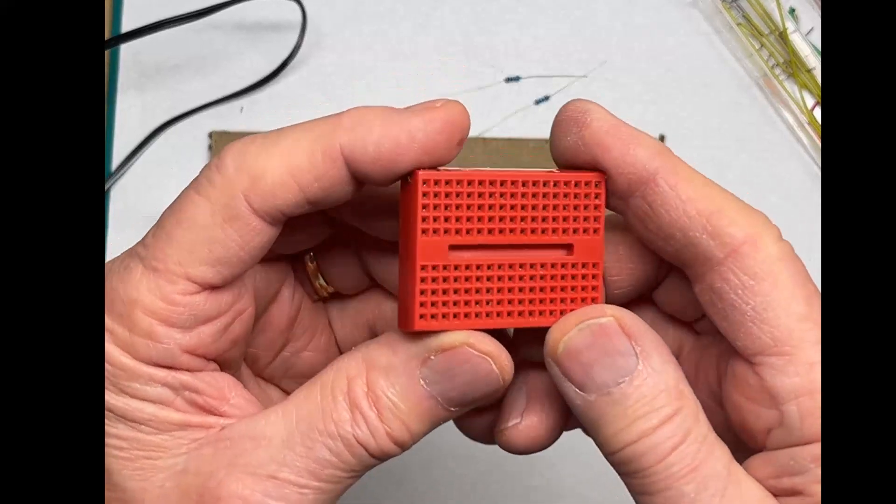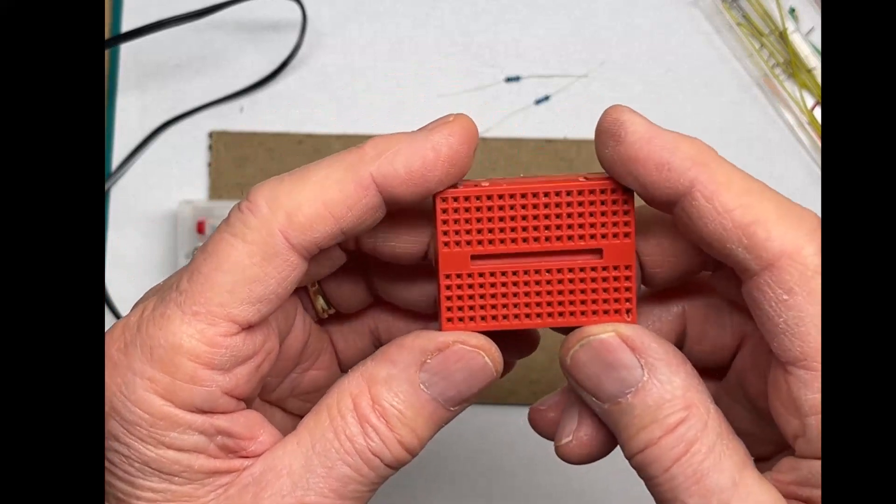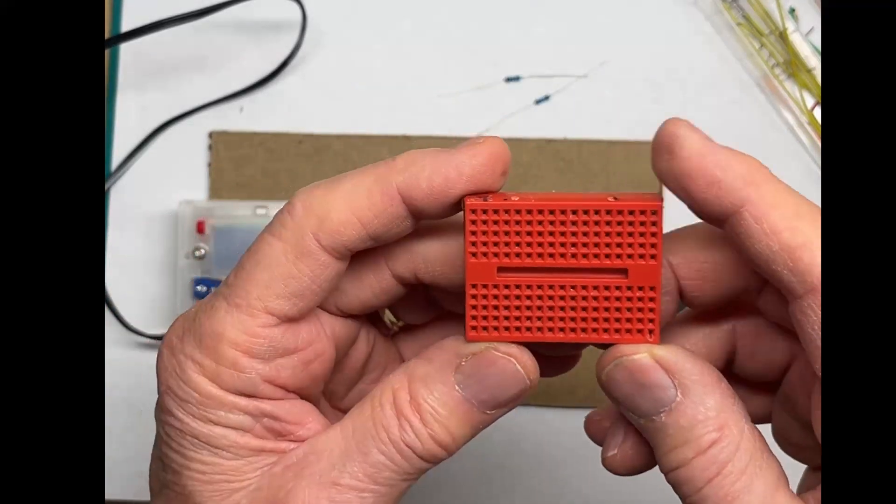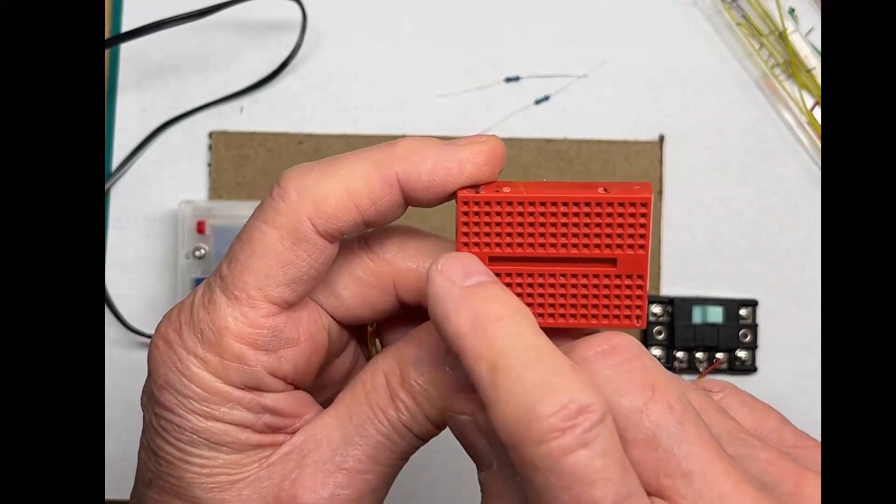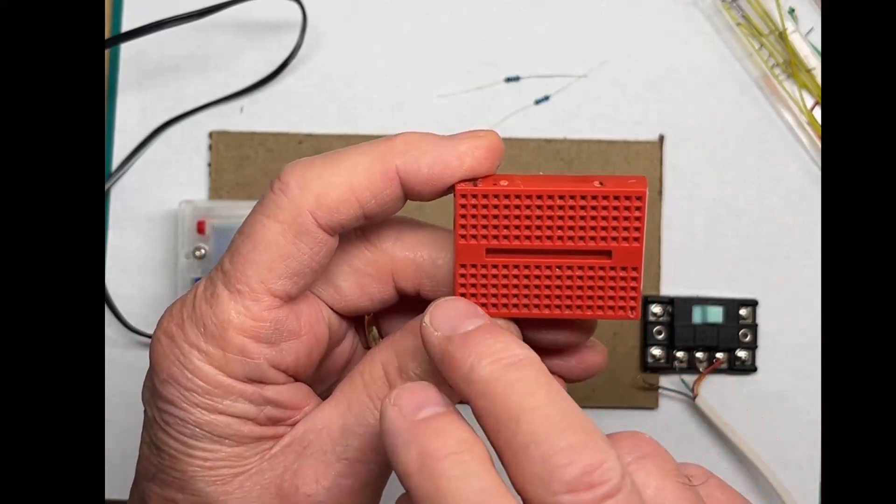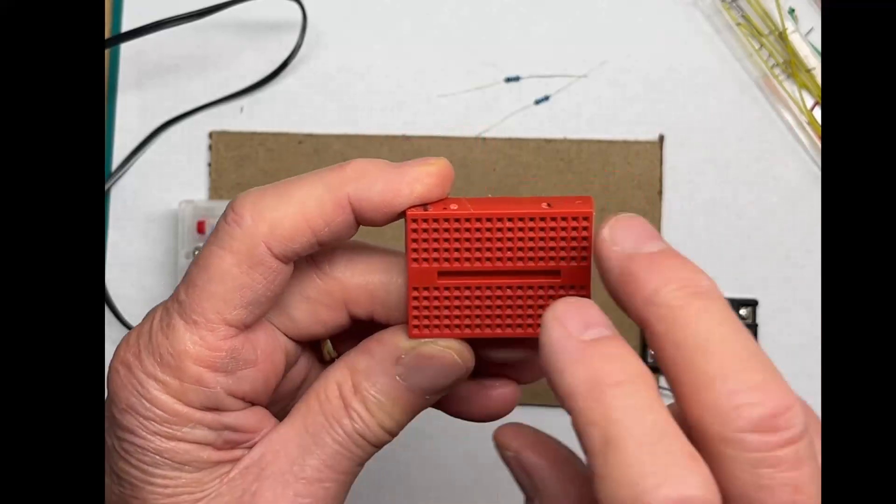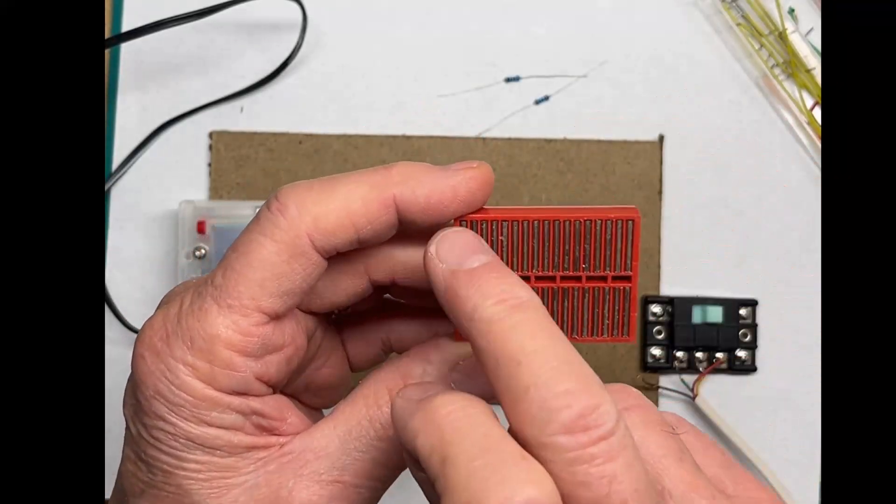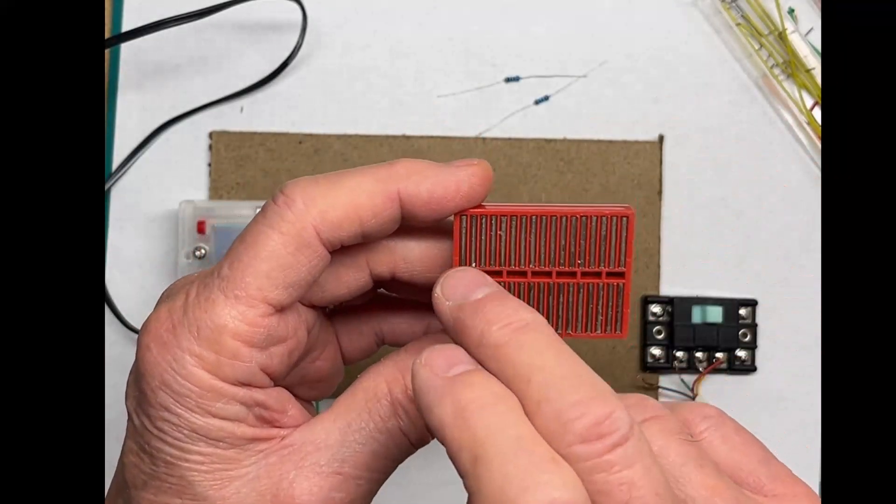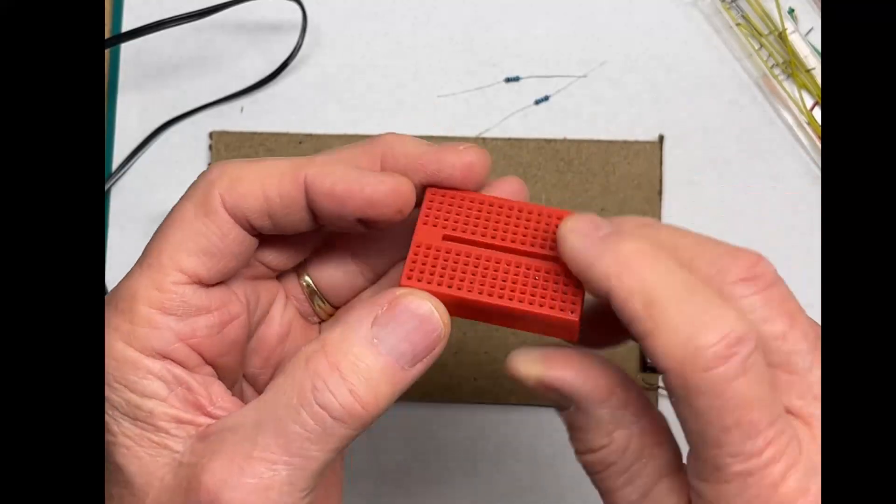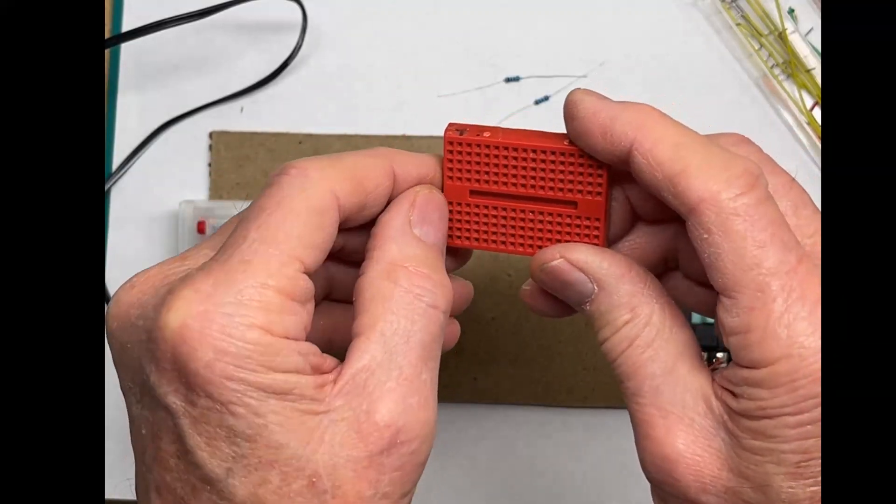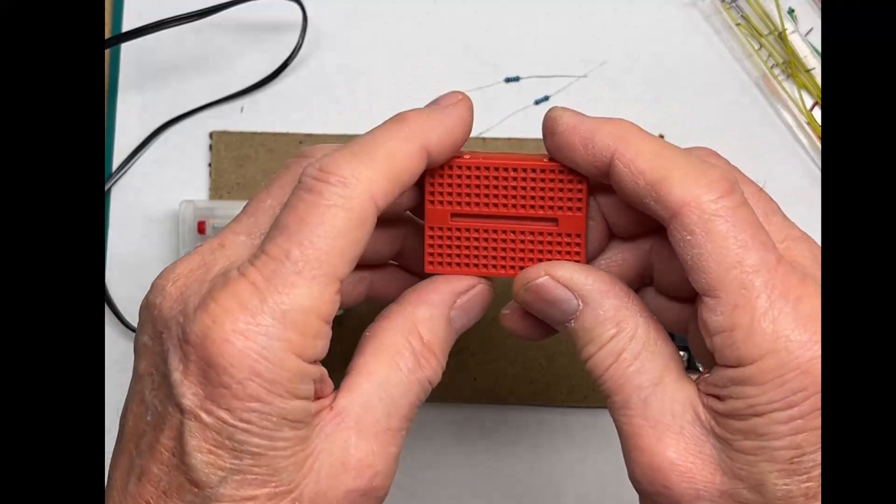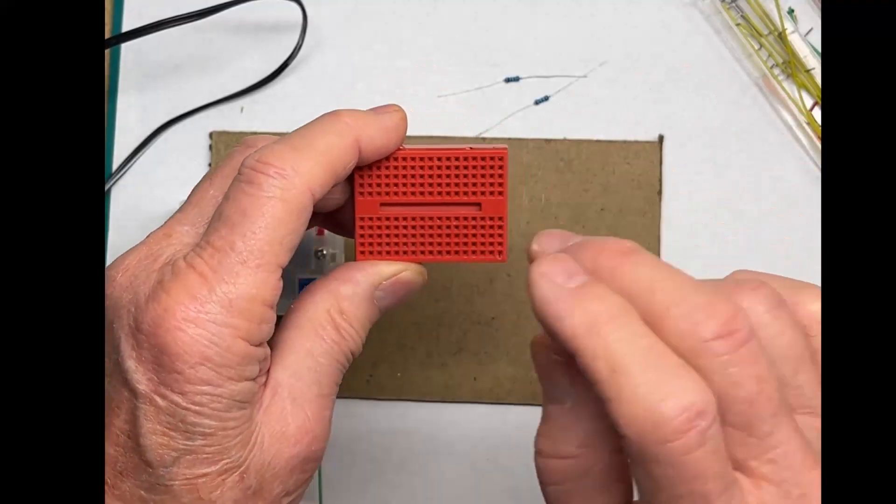Now these solderless breadboards are pretty cheap. You can get them on Amazon. They consist of five connectors, five holes arranged in columns here and here. If you turn them over, I've pulled the backing off of this. You see these metal connectors connect these five together and so on, and they're separate from the other side.